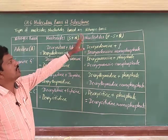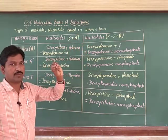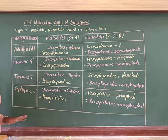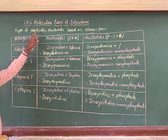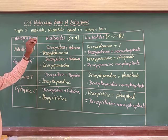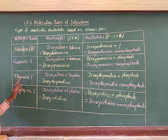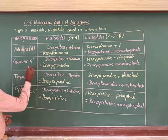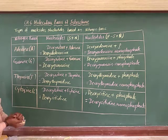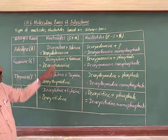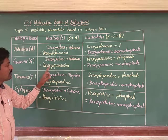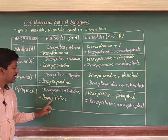In any nucleic acid — either DNA or RNA — there should be four types of nucleotides based on the nitrogen bases. There are five nitrogen bases in total: adenine, guanine, thymine, cytosine, and uracil. In DNA, uracil is absent; it is present in RNA instead of thymine. The four nucleosides are deoxyadenosine, deoxyguanosine, deoxythymidine, and deoxycytidine.